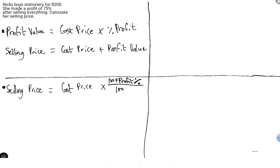We want the selling price. She made 75 percent more on what she bought the stationery for. So we first need to work with the cost price, because that's what helps us determine the profit. In order to understand how much you made, you need to know how much you spent — you compare the two. The difference gives you profit or loss. In this case, the cost price was 200 rands.